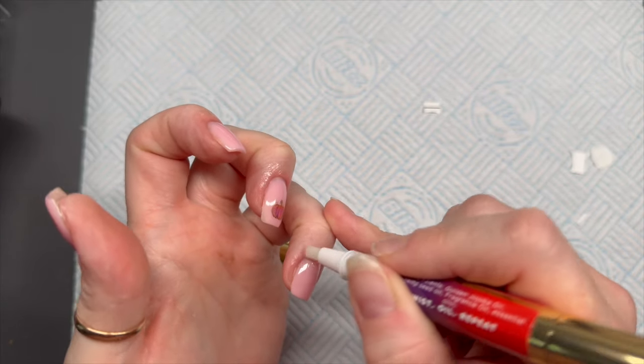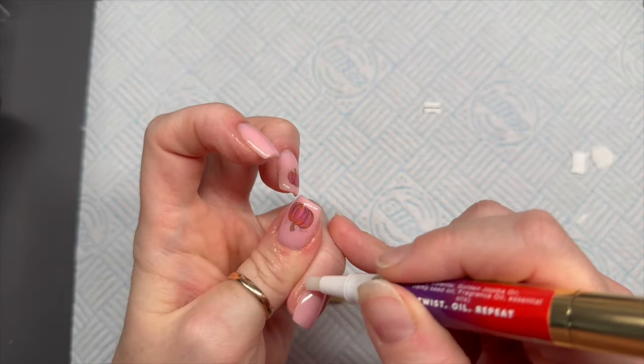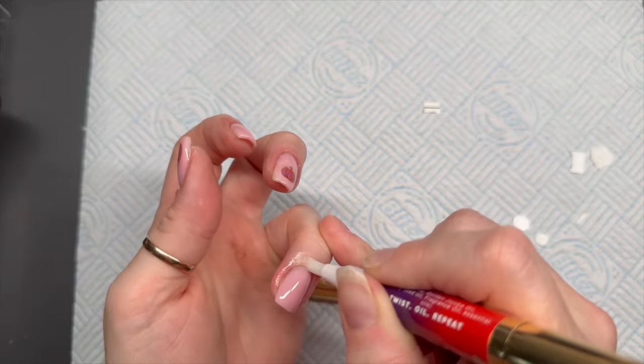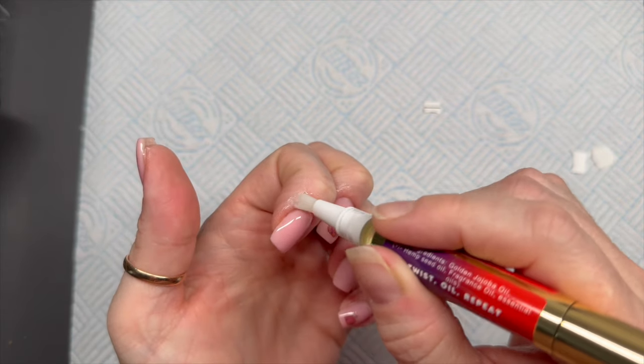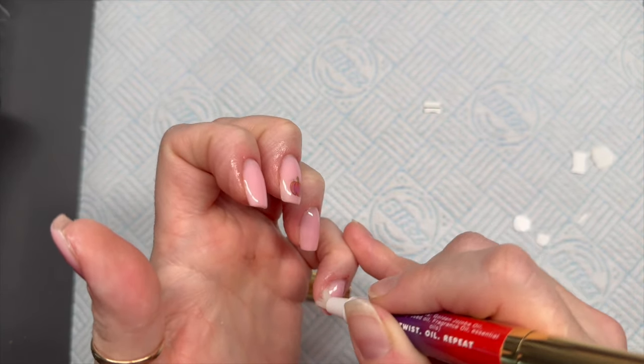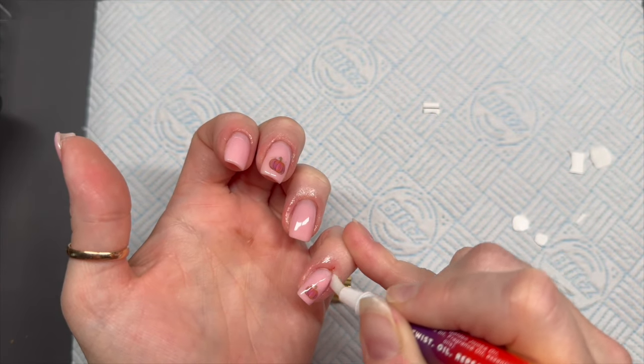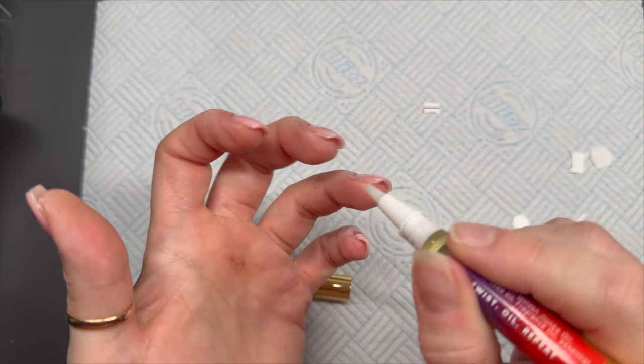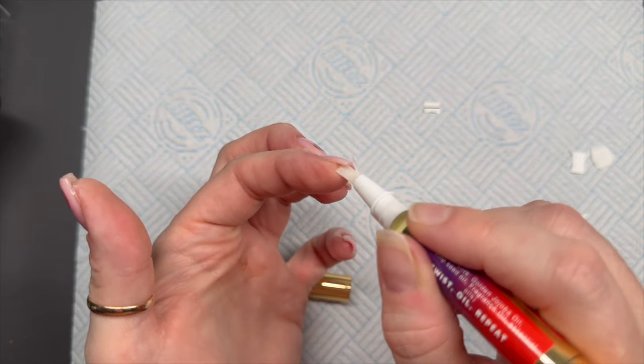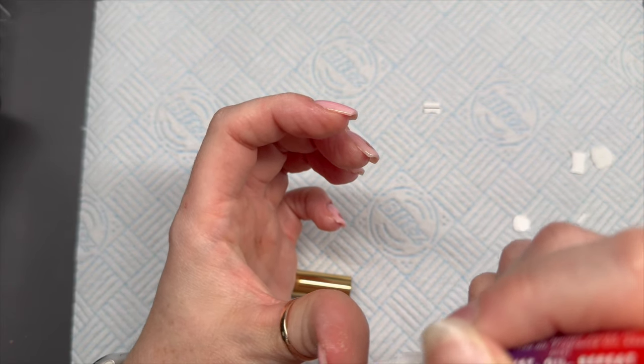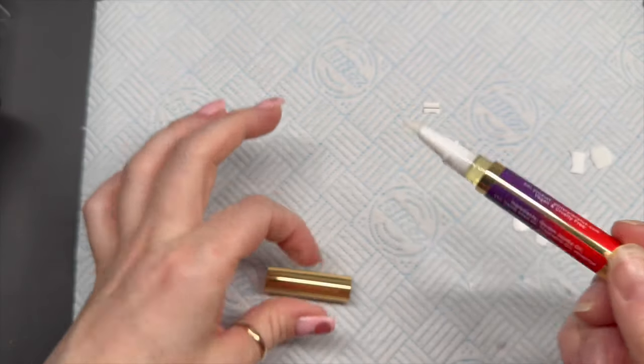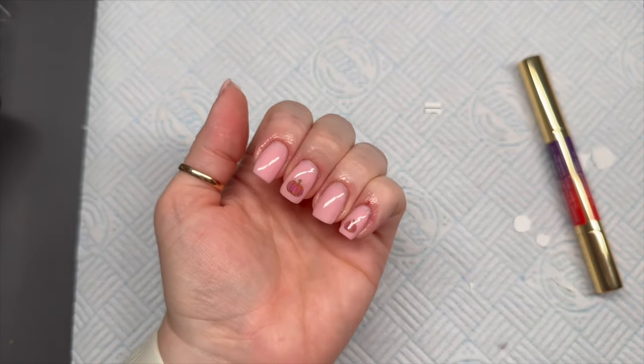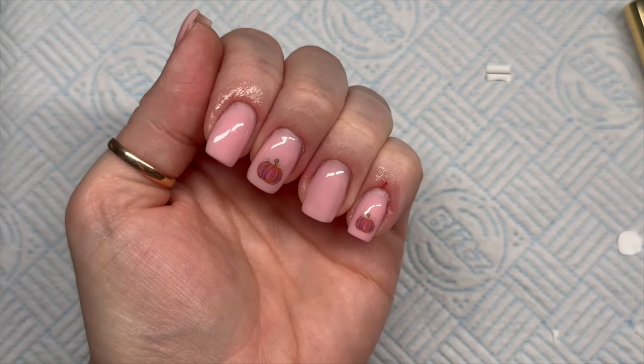Sometimes I found in the past that the cuticle oil almost dims the shine sometimes. Has anyone else had that? Maybe it's just me. I like to just go around the actual nail on the skin, not on the actual nail where I've top coated. Obviously we'll do that on all of them. And then just for kicks and giggles, extra measure, I'm going to go underneath here as well. This one smells nice, I like the smell of cherry.